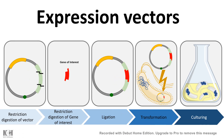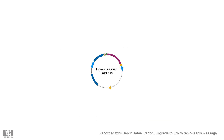In this video I'll be talking about expression vectors. So far we've been talking about cloning strategies, several vectors used in cloning — plasmids and also viral plasmids etc. In this specific video we'll be talking about a specific type of plasmid which is used to express proteins in mammalian or in bacterial cells.